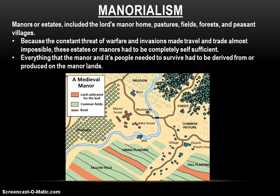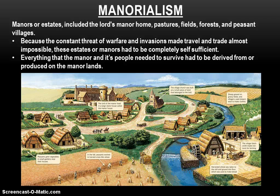Everything the manor needed to survive had to be produced on the manor's lands. You had to have the village where the peasants lived, fields to grow the crops, your own mill to grind down the grain, a water source — likely a river and a pond or lake — wooded areas to provide lumber, and fields for your livestock to graze. Everything it took to survive had to be right there on the feudal manor.